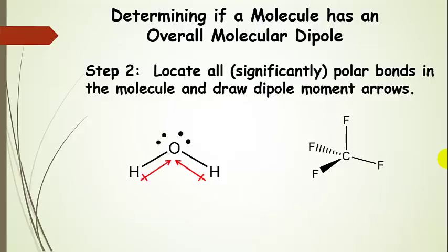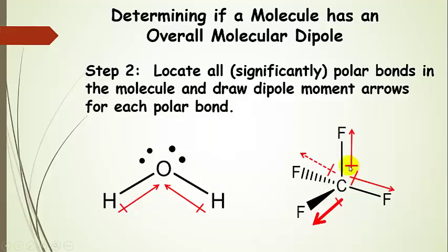We draw bond dipole moment arrows onto these molecules. For water, the arrow points toward the more electronegative atom, with the plus on the partial positive end. The bond dipoles point toward the oxygen, and both are pointing in the general upward direction. For carbon tetrafluoride, the partial positive is on the carbon. Electron density is drawn away from carbon toward fluorine on all four bonds equally — these are all equivalent carbon-fluorine bonds, and the dipole moment points toward fluorine in each one.